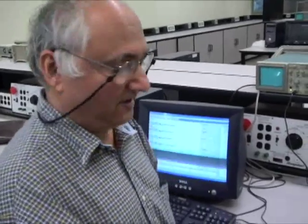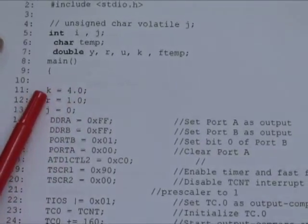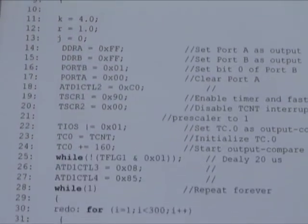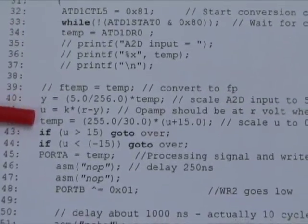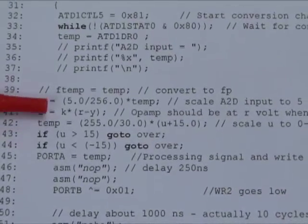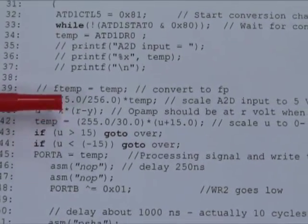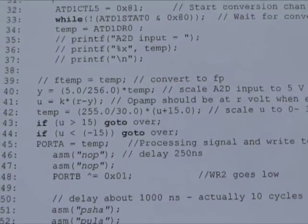Now we have k equal to 4, where I have changed the program. K has been set at 4, and this value will feed into this equation, which is the heart of the system: u equals k times (r minus y), where u is now playing the role of c. Instead of c, we just have used the variable u.